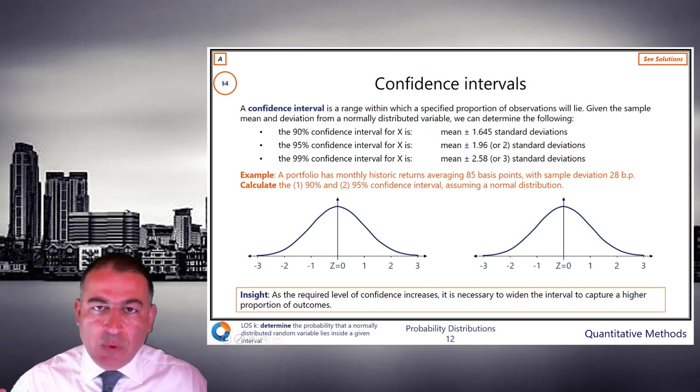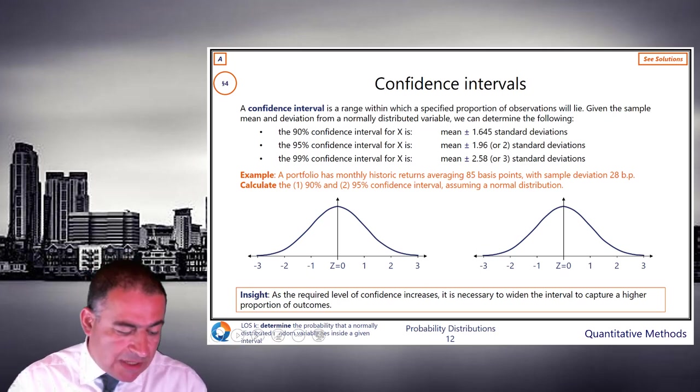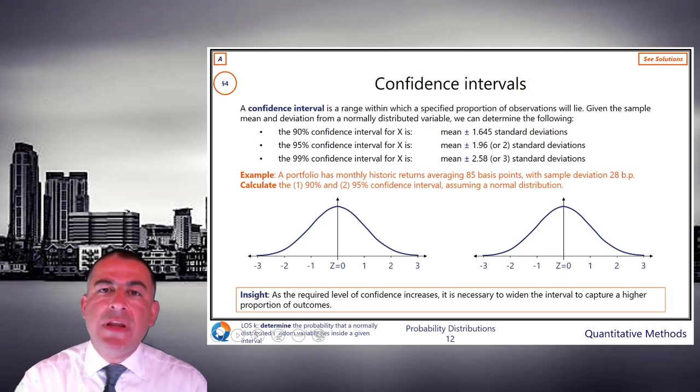The wider it is, the more confident we are that our random variable will land in here. So let's do this example, or you can do this example. You can see that 90, 95, 99% is the mean plus or minus certain number of standard deviations. We saw that when we were defining the normal distribution.